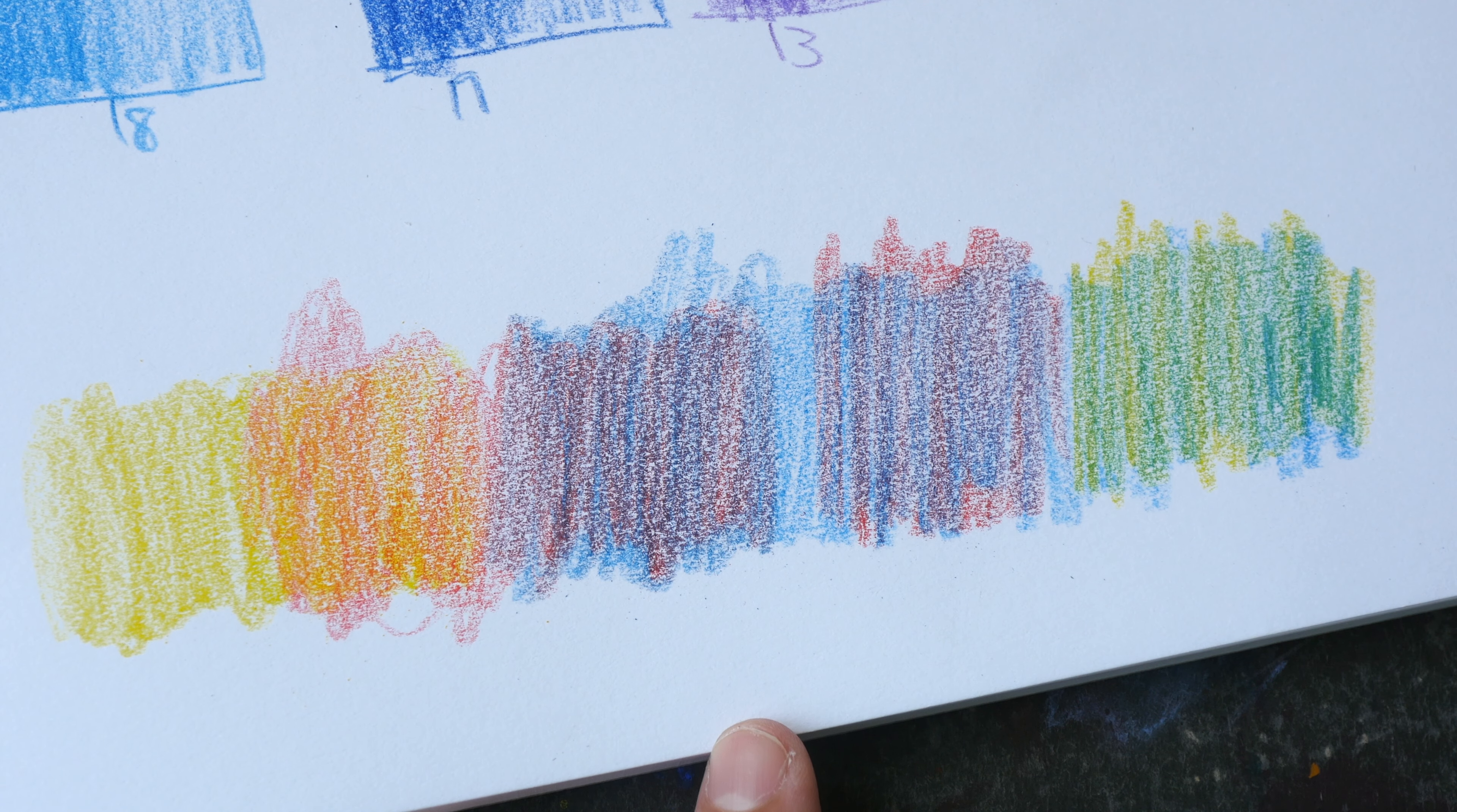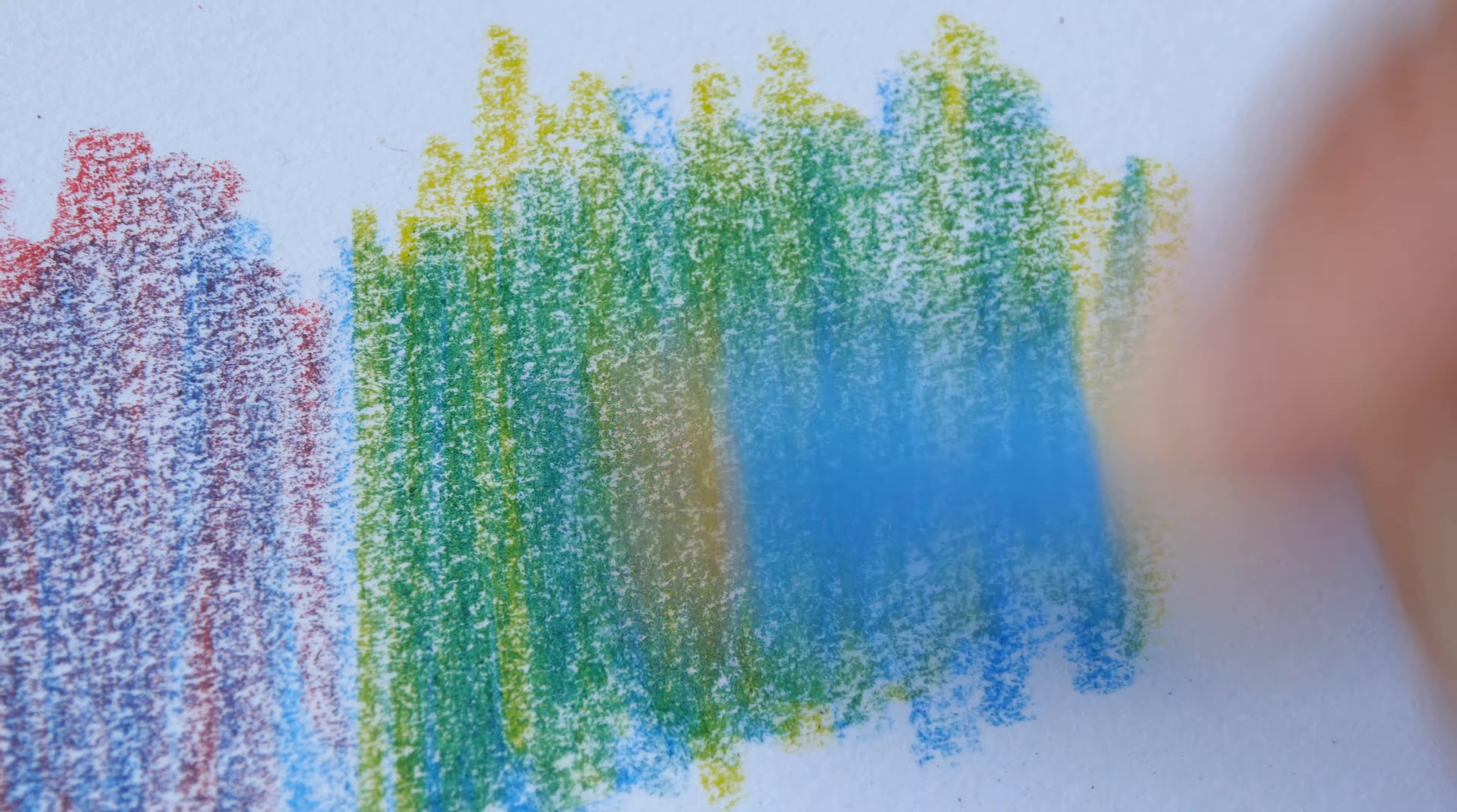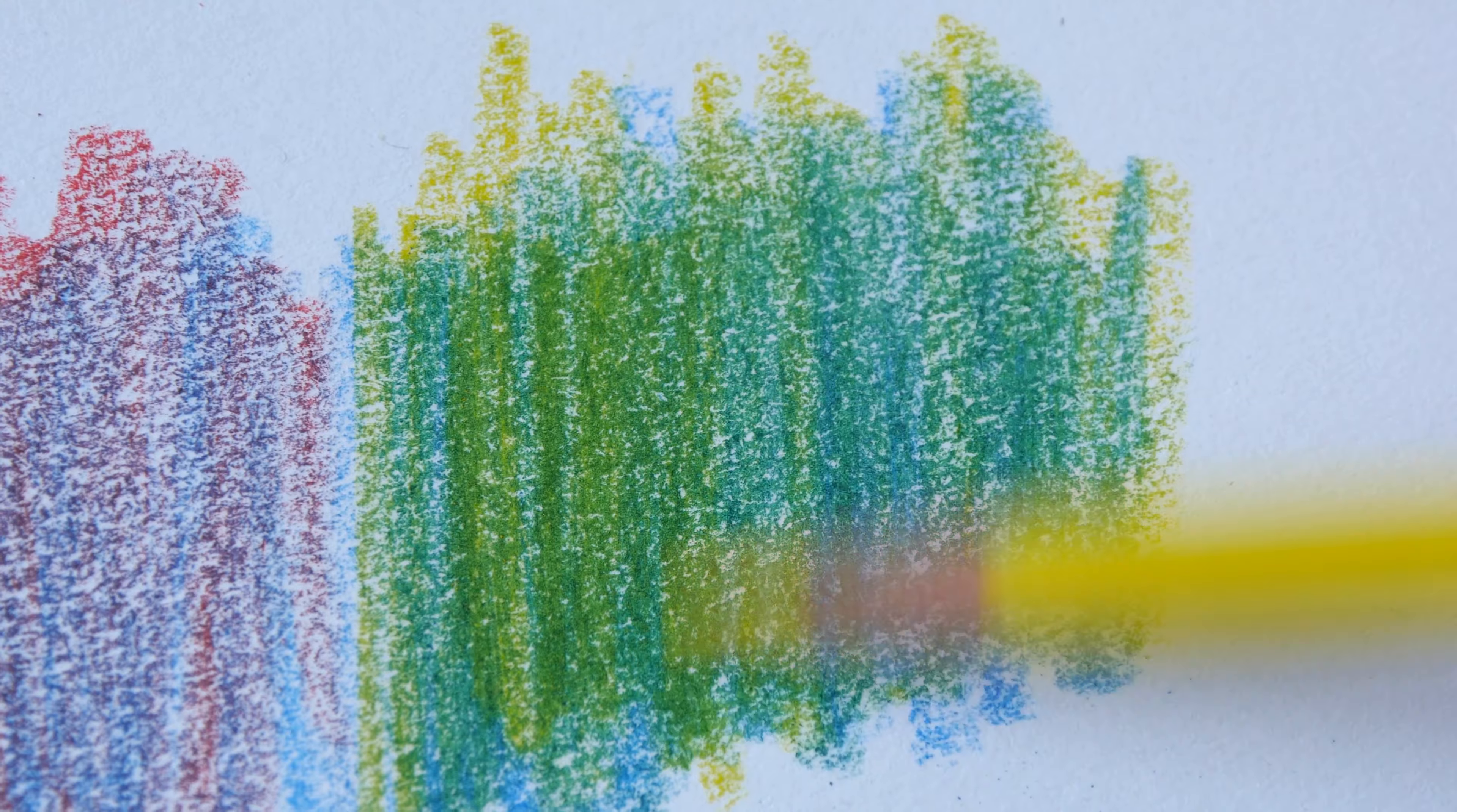The colors layer quite well. Let's see what happens when I press really hard. The paper that I'm using has fine green texture. Let's layer yellow over the blue.